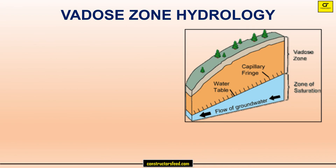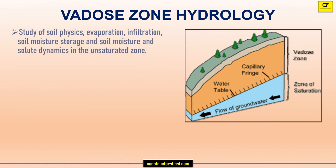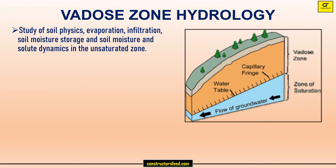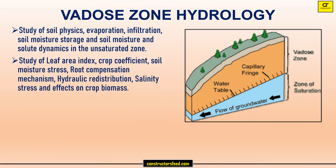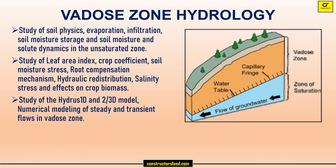Vadose zone hydrology: study of soil physics, evaporation, infiltration, soil moisture storage, and soil moisture and solute dynamics in the unsaturated zone. Study of leaf area index, crop coefficient, soil moisture stress, root compensation mechanism, hydraulic redistribution, salinity stress and effects on crop biomass. Study of the HYDRUS 1D, 2D, and 3D models for numerical modeling of steady and transient flows in the vadose zone.